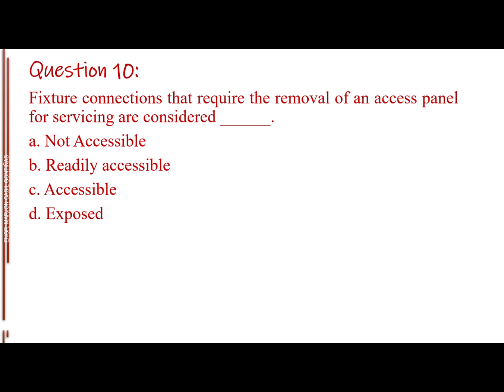Question number 10. Fixture connections that require the removal of an access panel for servicing are considered blank. Letter A, Not accessible. Letter B, Readily accessible. Letter C, Accessible. Letter D, Exposed. The answer is Letter C, Accessible.